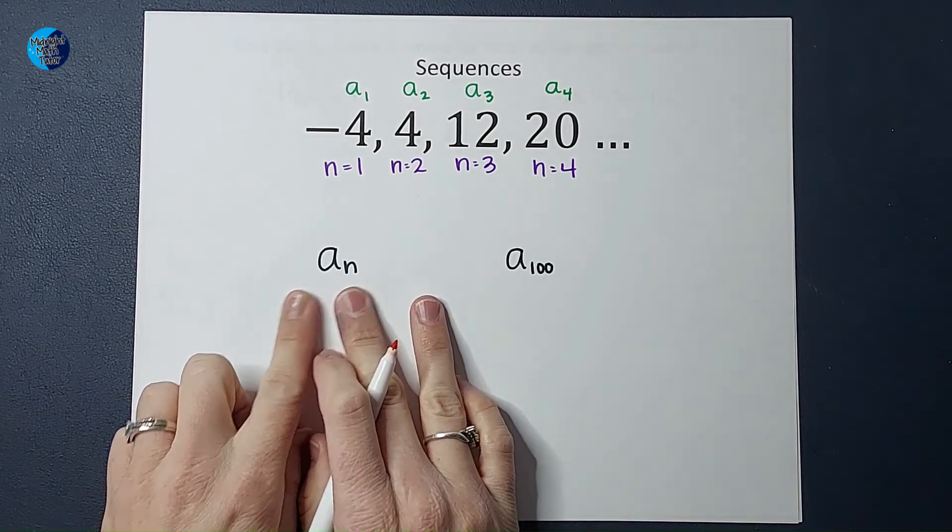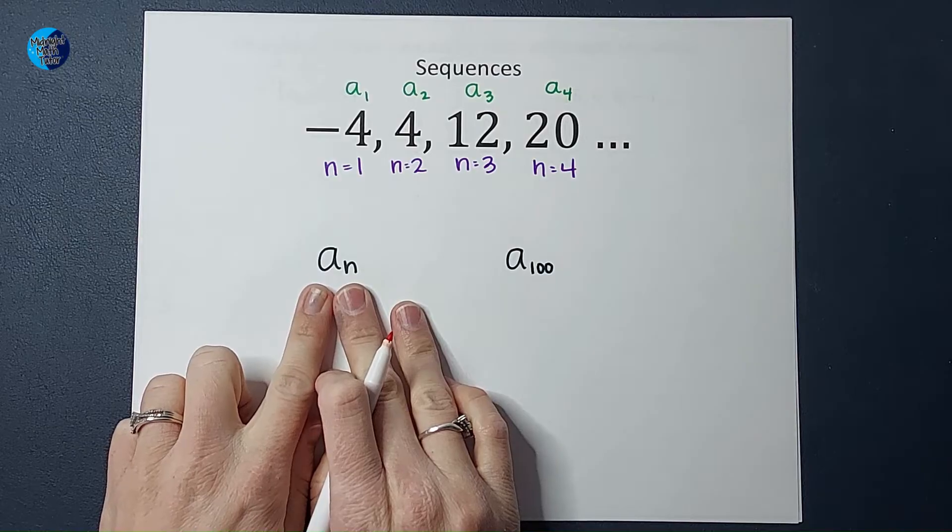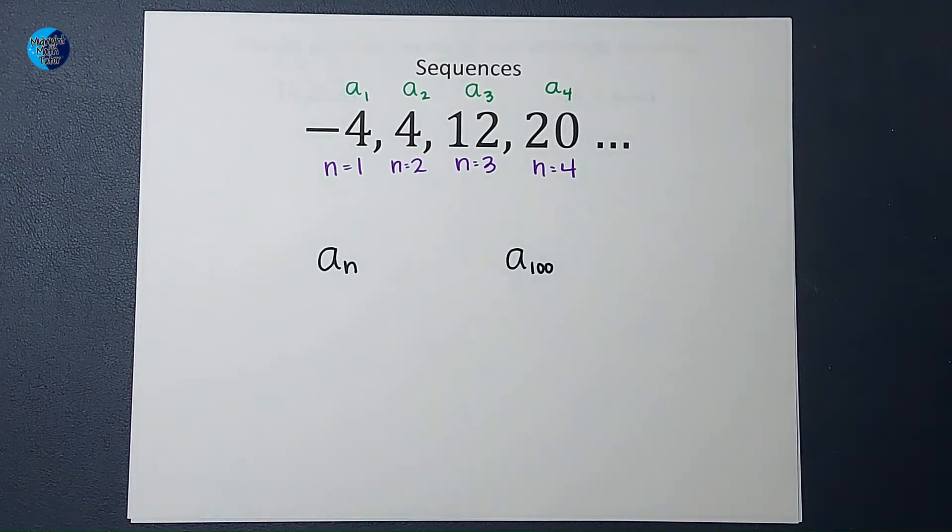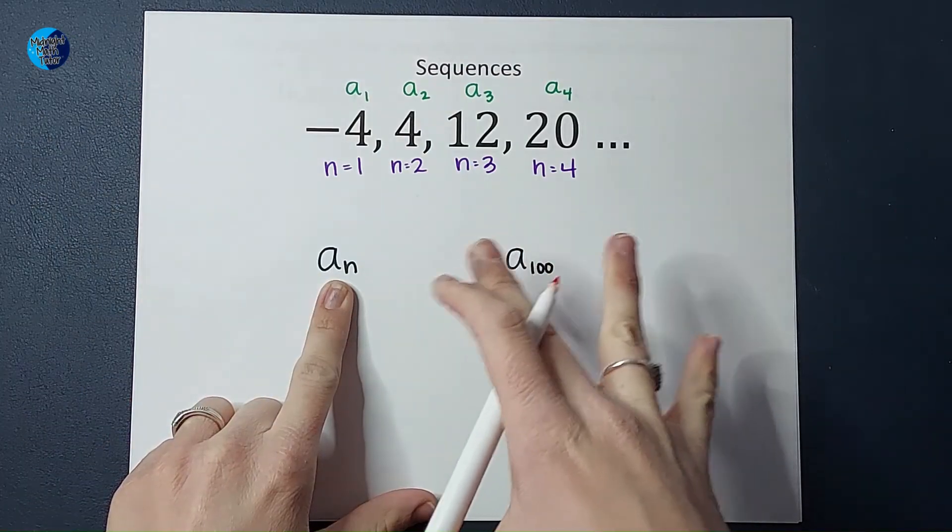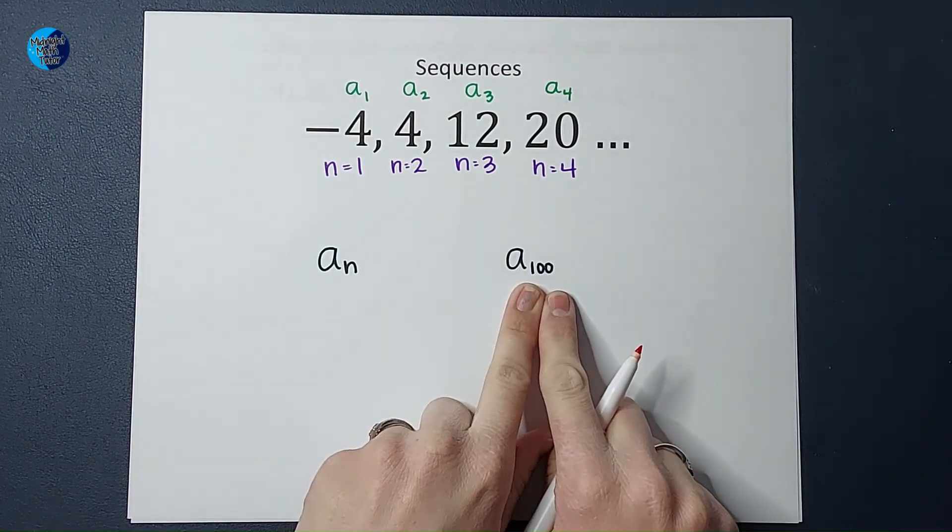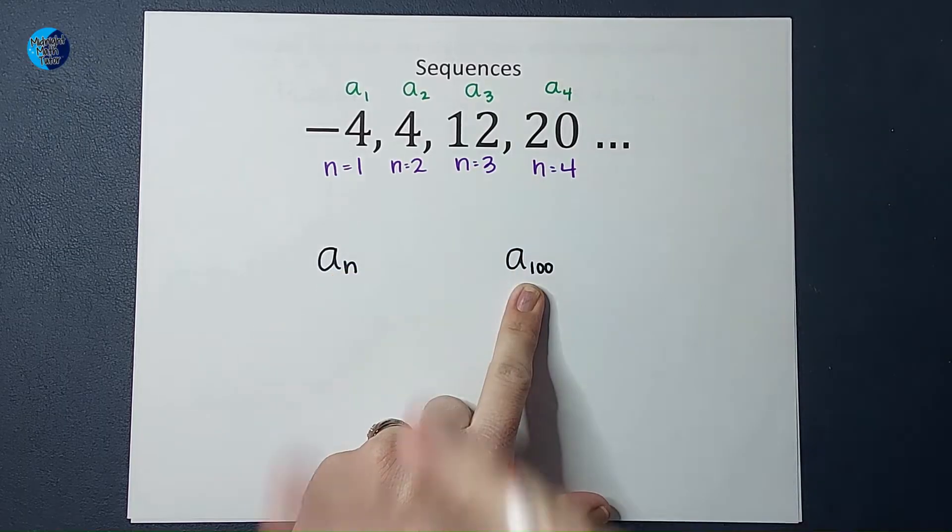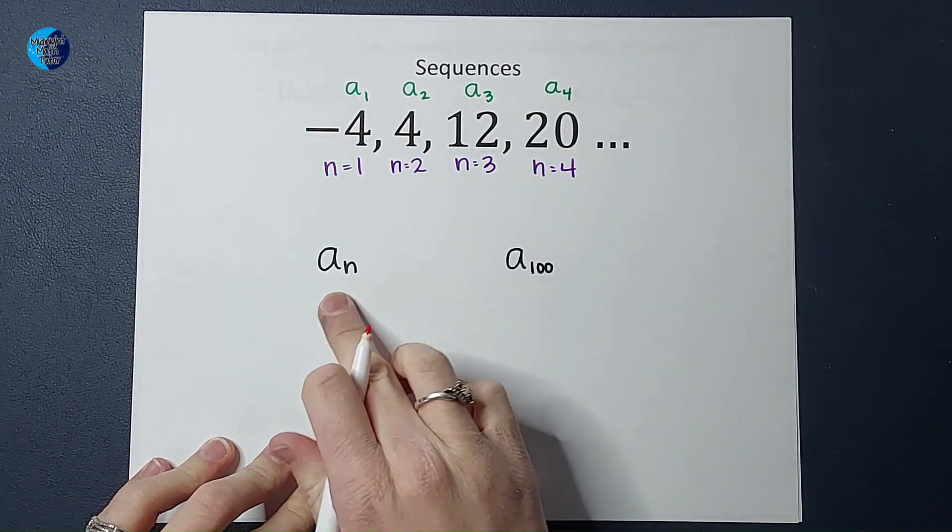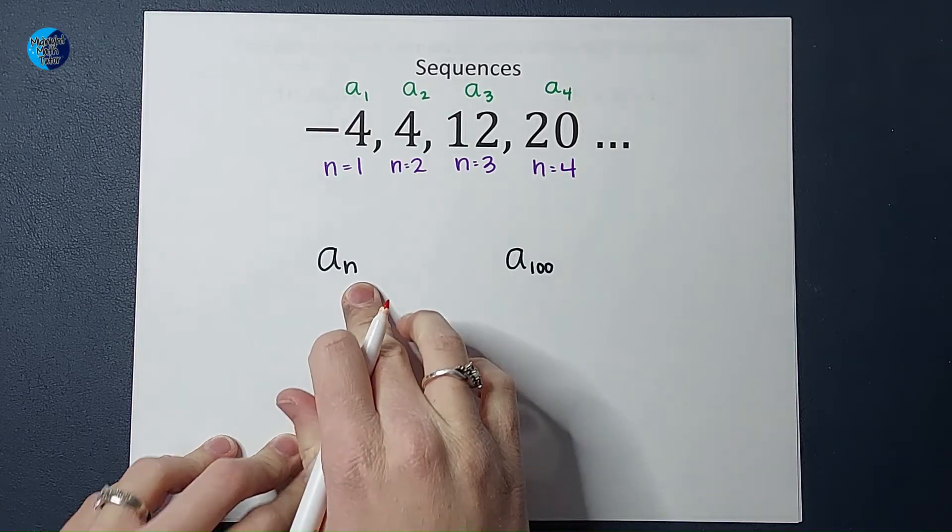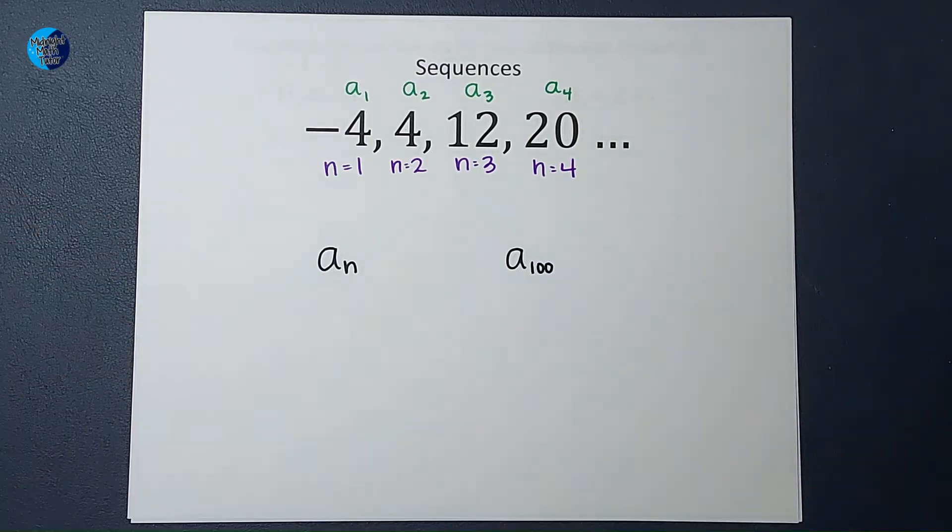You're also going to see A sub n quite frequently. What that is saying is plug in whatever number you want for n to find that in the sequence. So if I had A sub 100, I'm looking for the 100th term. As we write our formulas, we're going to leave a lot of things as A sub n so people can plug in what they want.